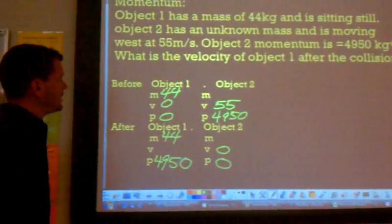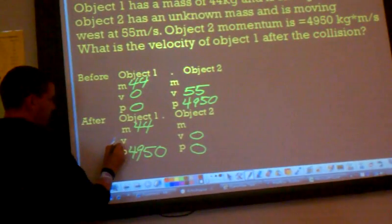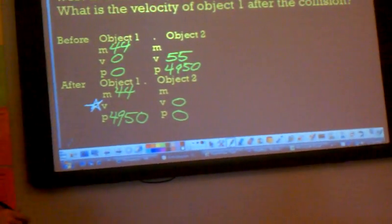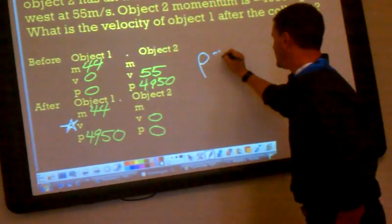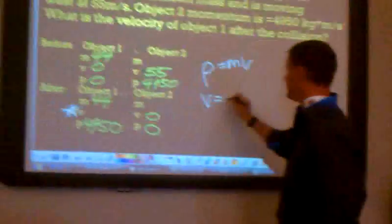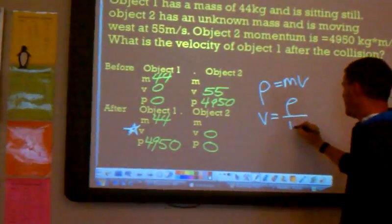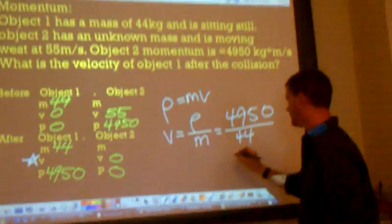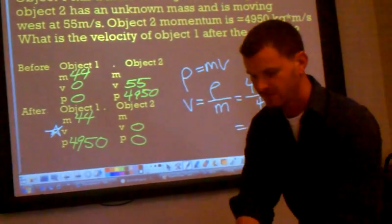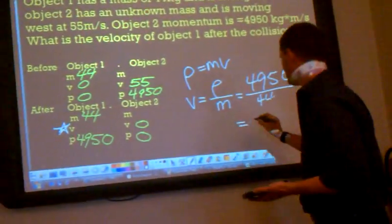So the momentum for object one after the collision must be 4950. What we are looking for is what is the velocity of object one after the collision. This is what we are looking for. The velocity of object one after the collision. We can work this one out just by saying momentum is equal to mass times velocity. Velocity is equal to momentum over mass. So it's 4950 divided by the mass which is 44. That should give you 112.5.